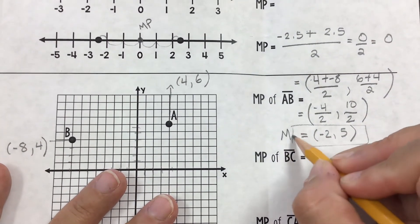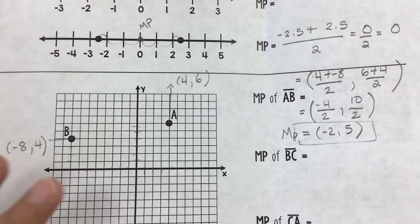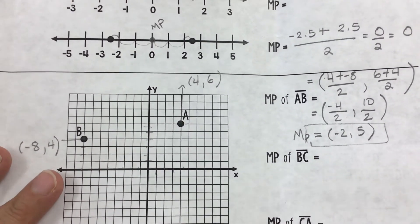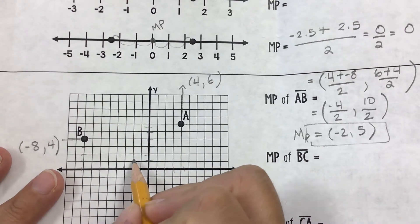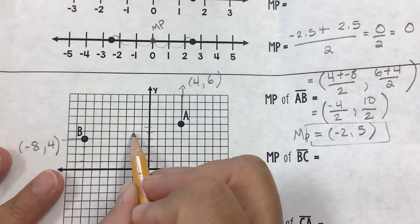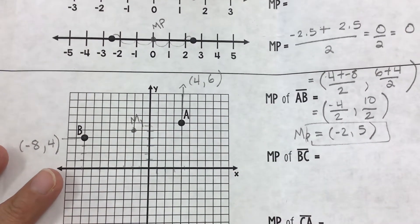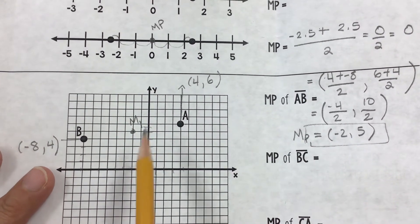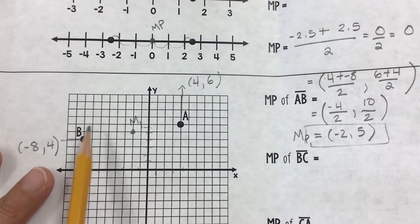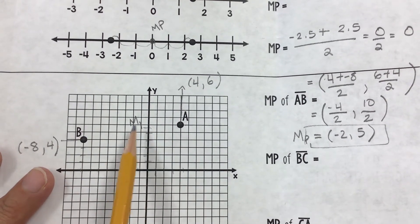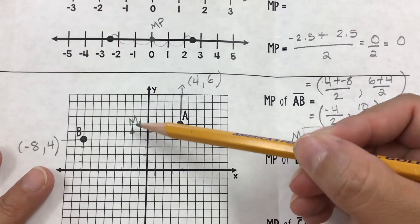Your final answer would be negative 2 comma 5, because negative 4 divided by 2 is negative 2, and 10 divided by 2 is 5. Make sure you close the parentheses because your answer is an ordered pair. Let me call this midpoint 1. I'm going to plot it: negative 2 on x, and up 5 on y. And this is midpoint 1. As you can tell, it is the same distance from the x values and the same distance from the y values of both original points.